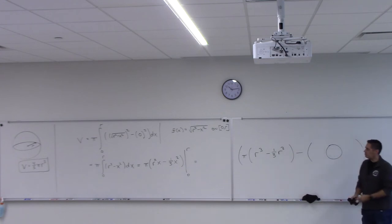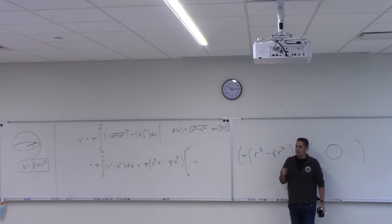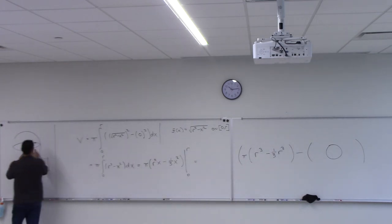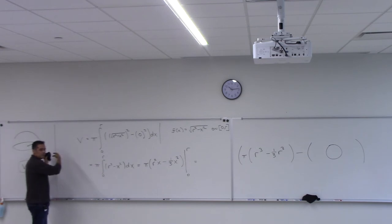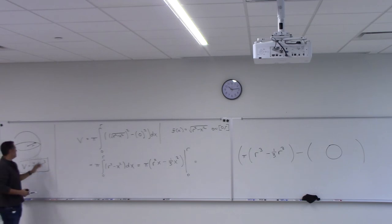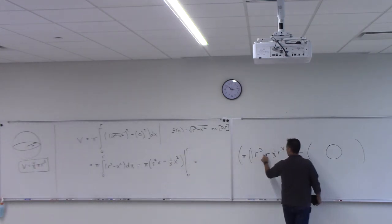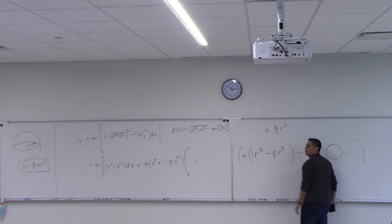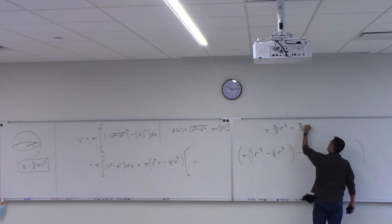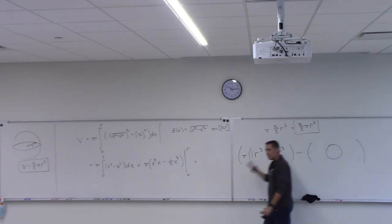So we get π times (r³ - (1/3)r³) = π times (2/3)r³, which gives us (2/3)πr³. But remember, this was only half of it — we only looked from zero to r. So take that and multiply by two, and you get (4/3)πr³. That's something you probably never thought you could do — verify that the volume of a sphere is (4/3)πr³. Pretty awesome!